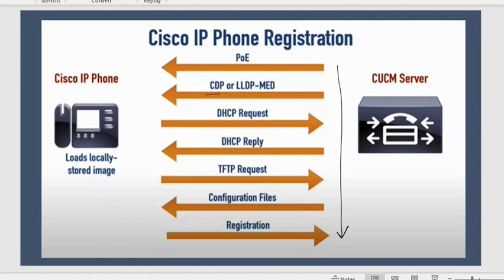The next step is CDP or LLDP. First step is Power over Ethernet, and then second, it needs a VLAN — a voice VLAN. To get that voice VLAN, it uses CDP, and that is through a switch. The switch will provide the VLAN information. In the case of a Cisco switch, it will be CDP only. It can be LLDP also, because LLDP is an open standard — so if on the switch you have configured LLDP, it will use LLDP. If it is a vendor other than Cisco, then it will be LLDP only. Either way, the protocol will provide you the VLAN information. That is the purpose.